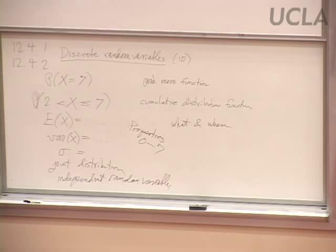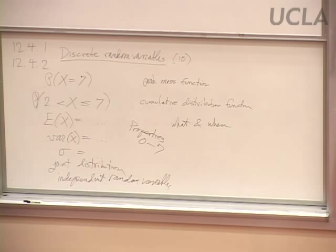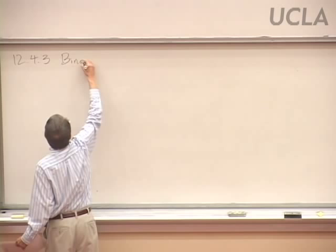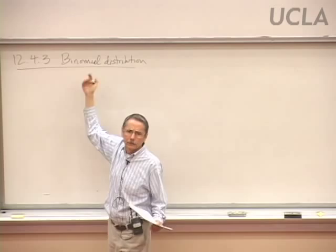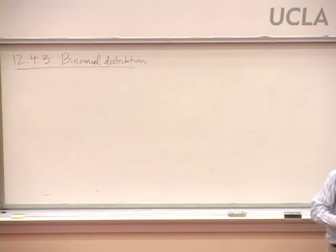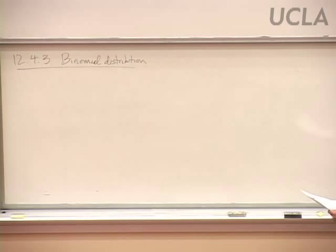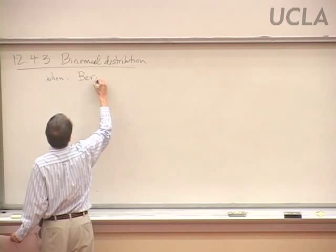Finally, the binomial distribution — our most recent topic. This is where we have so-called Bernoulli trials: independent pass-fail trials each with the same success probability. The binomial distribution is the first of several specific distributions we'll talk about; we'll come later to the geometric distribution, Poisson distribution, exponential, and normal. When to use it: when we're looking at Bernoulli trials.